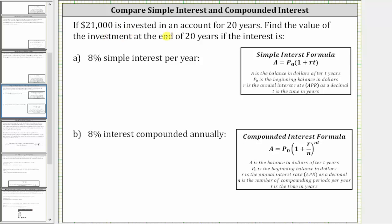If $21,000 is invested in an account for 20 years, find the value of the investment at the end of 20 years if the interest is first 8% simple interest per year and then 8% interest compounded annually.